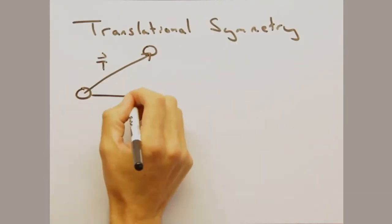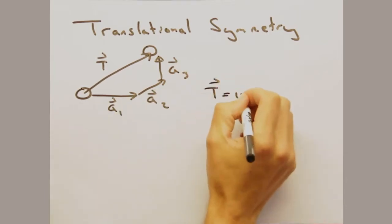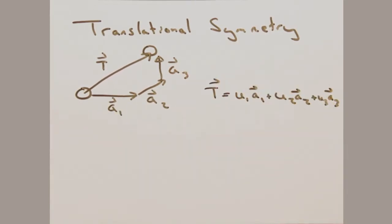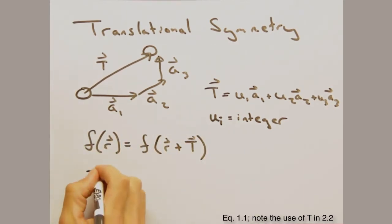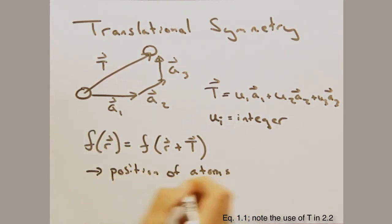When we say translational symmetry, imagine a vector t built out of three vectors. If we took some function f of r and translated r by this vector t, we should get to our original f of r. Physically we can imagine this function as the position of our atoms or the electron density.